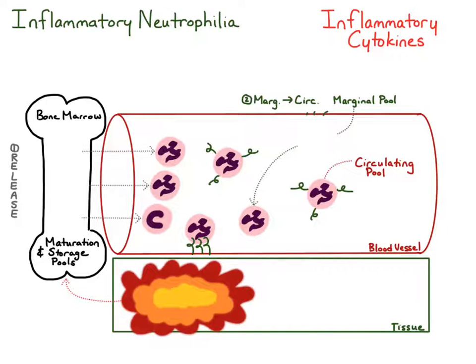The neutrophils at the site of inflammation don't go back into the circulating pool. Instead, they migrate into the inflamed tissues to help fight whatever the inflammatory cause is.